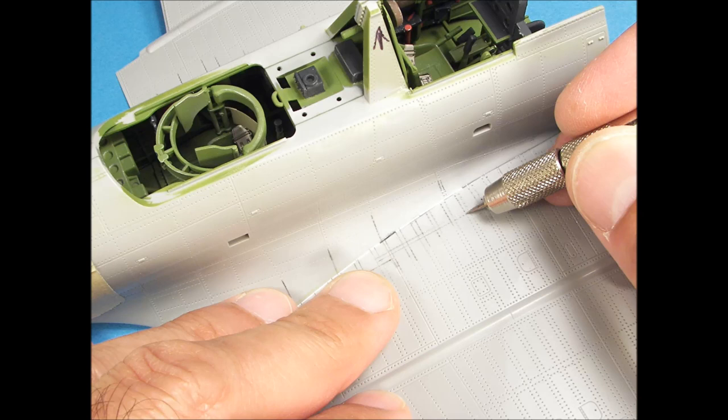Here's another example of using a punch to restore indented rivet detail. In this case, the rivet detail was shallow, so I pressed the punch a bit deeper into the plastic to duplicate the rivets.